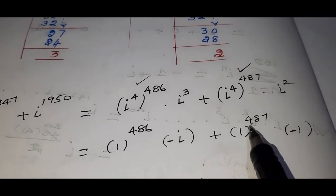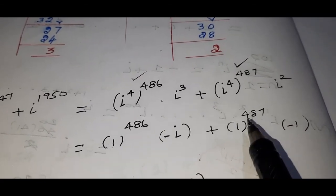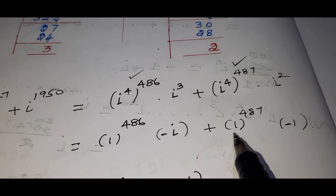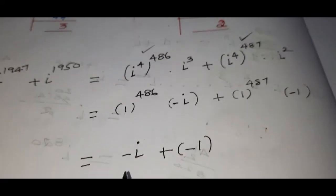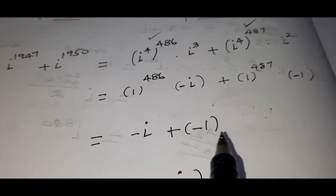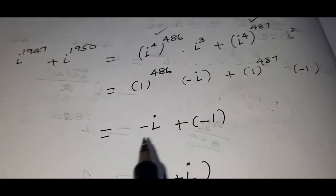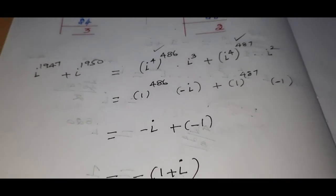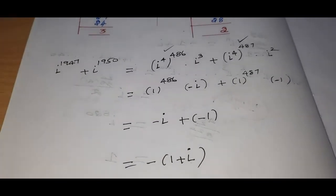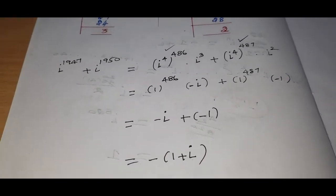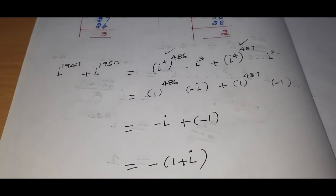So we get i power 3 plus i squared, which equals minus i plus minus 1. That gives minus i minus 1, which is minus of 1 plus i. This is the answer to question number 1.